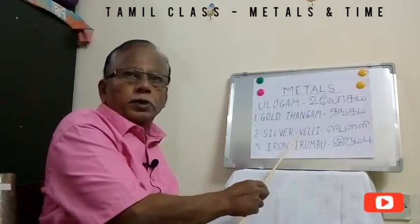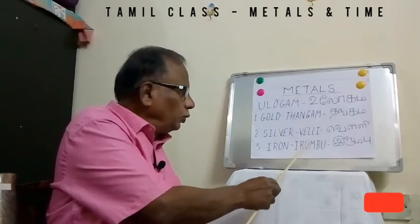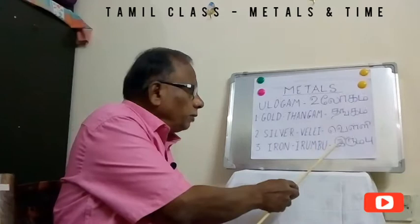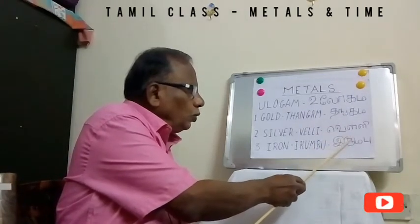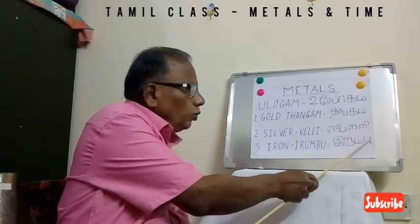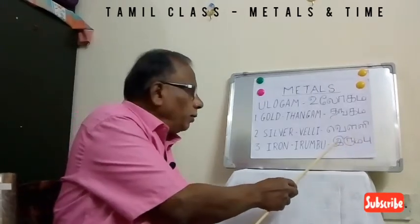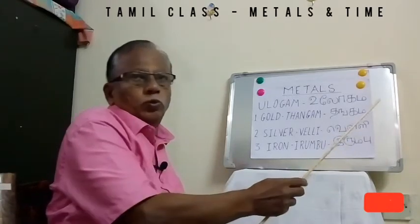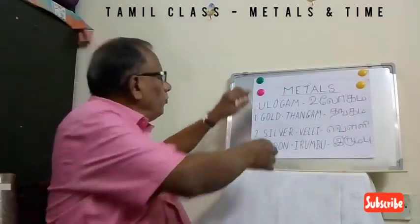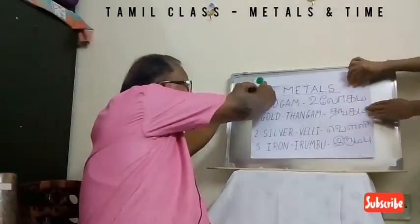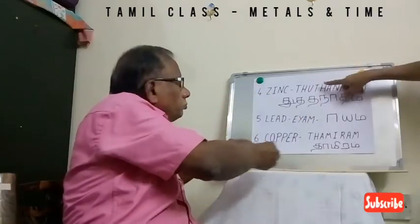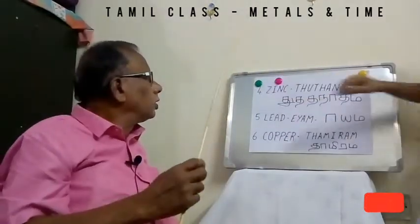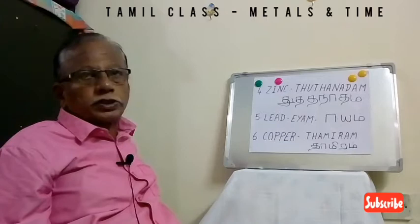Third one is Iron. In Tamil it is called Irumbu — I-R-U-M-B-U. In Tamil pronunciation it is E-R-U-M-B-U. I am writing once again: I-R-U-M-B-U.